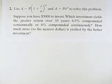Use A equals P times the quantity 1 plus R over N to the NT and A equals PE to the RT to solve this problem.